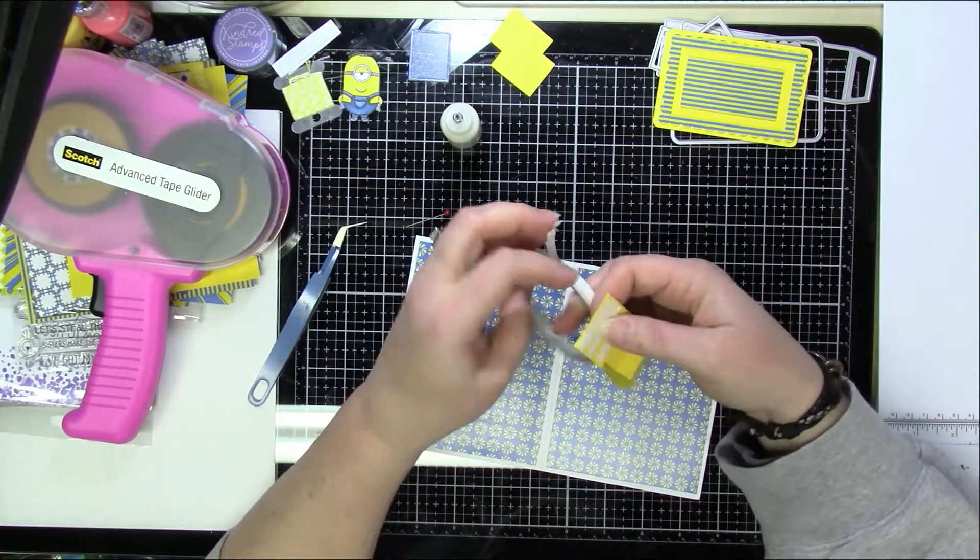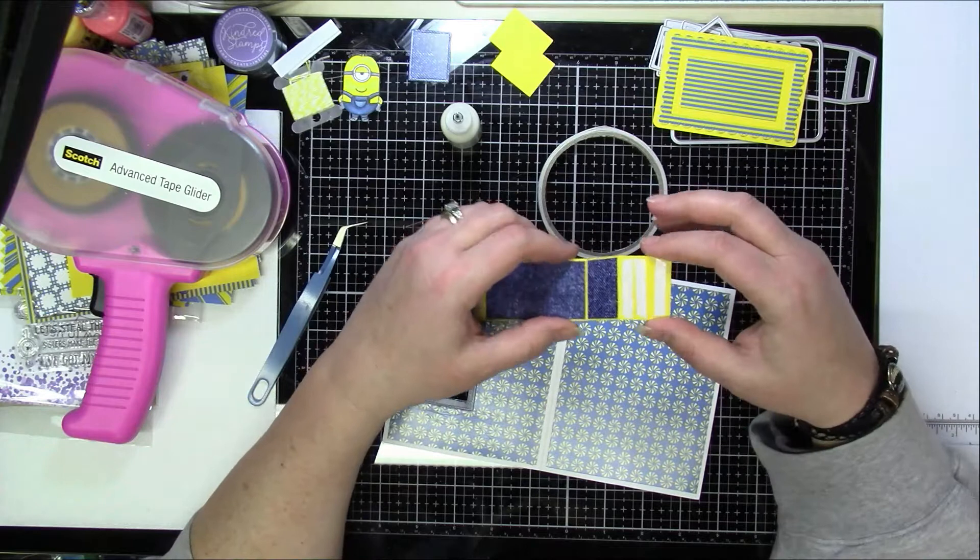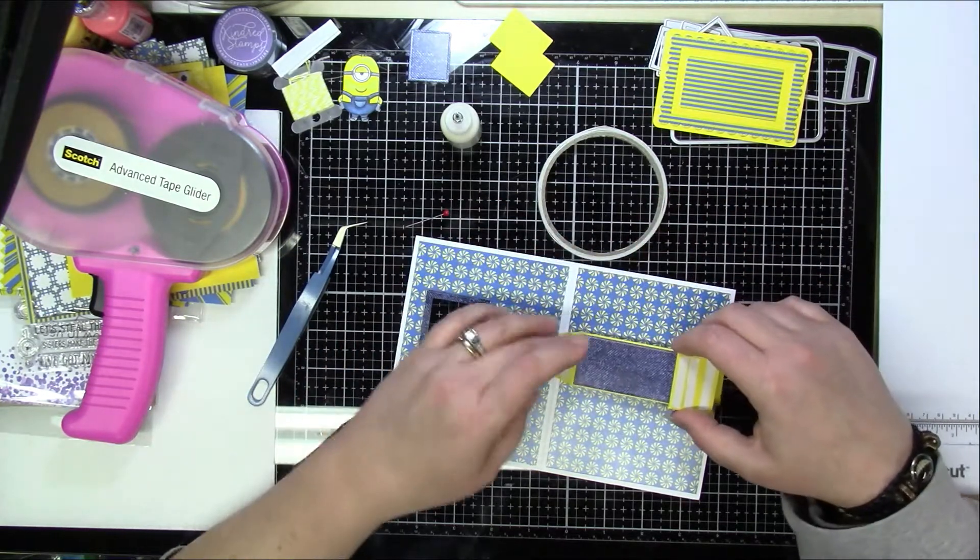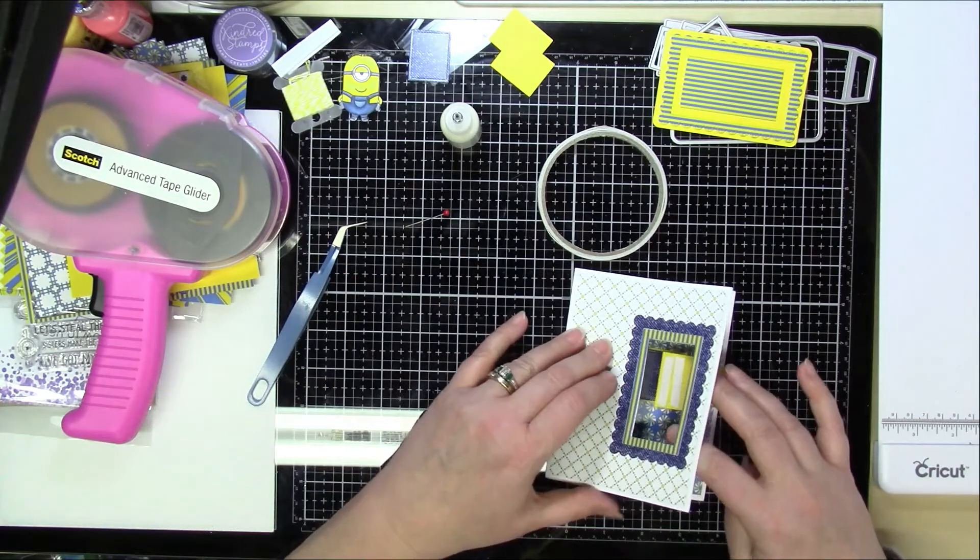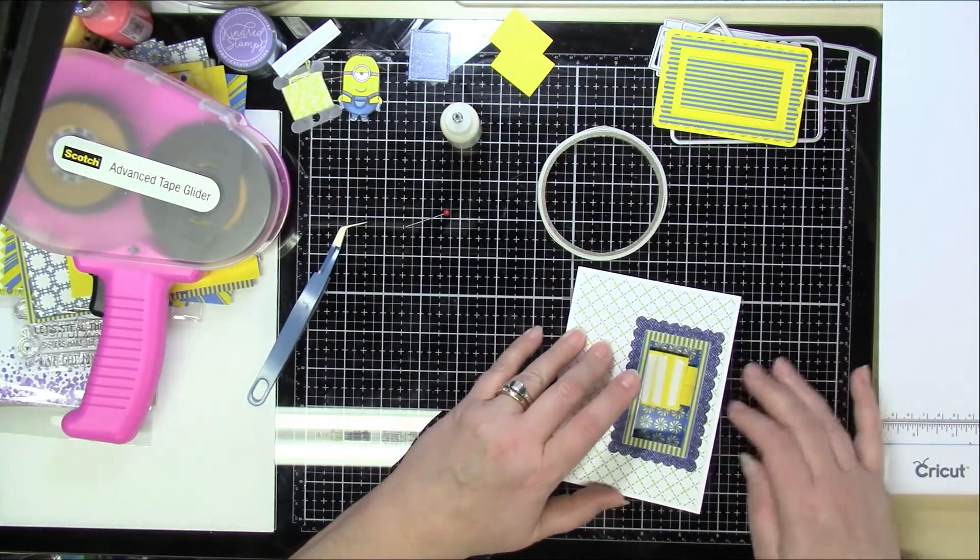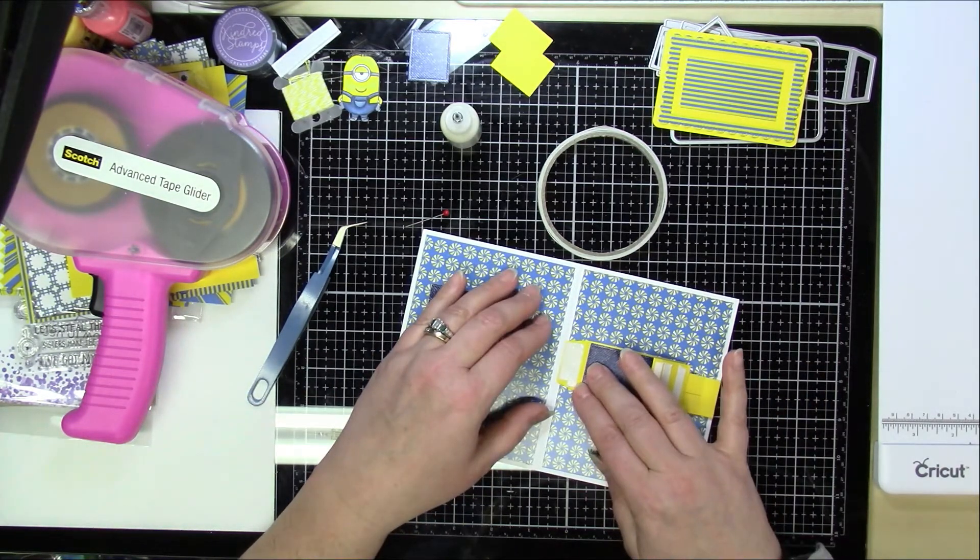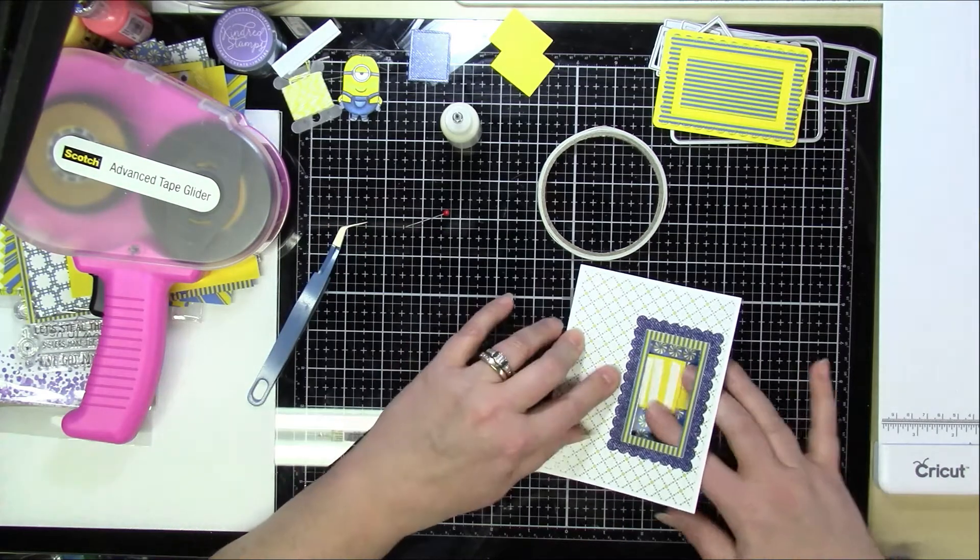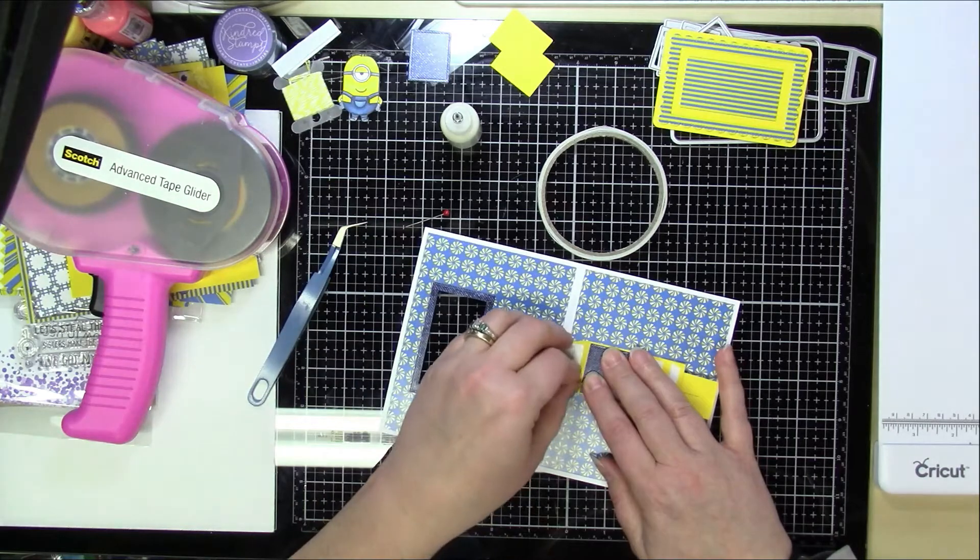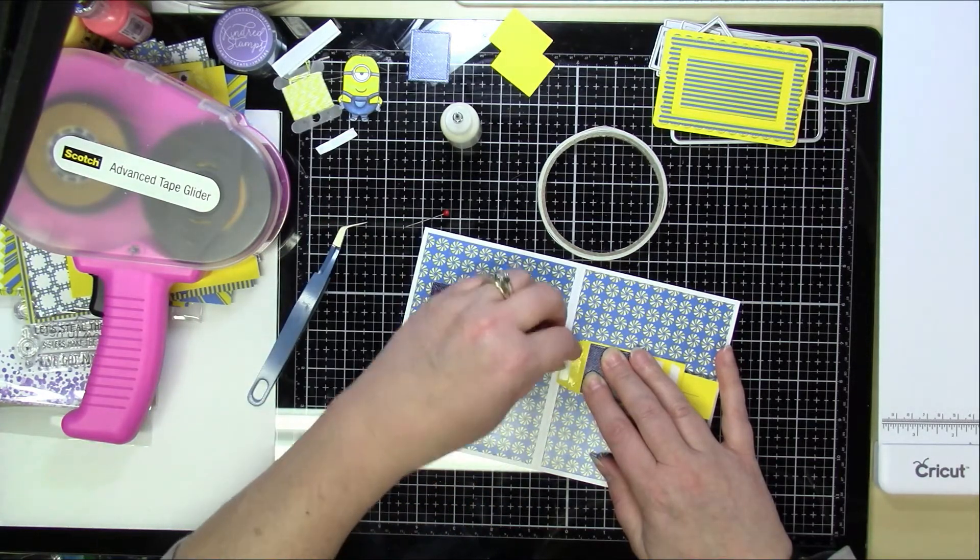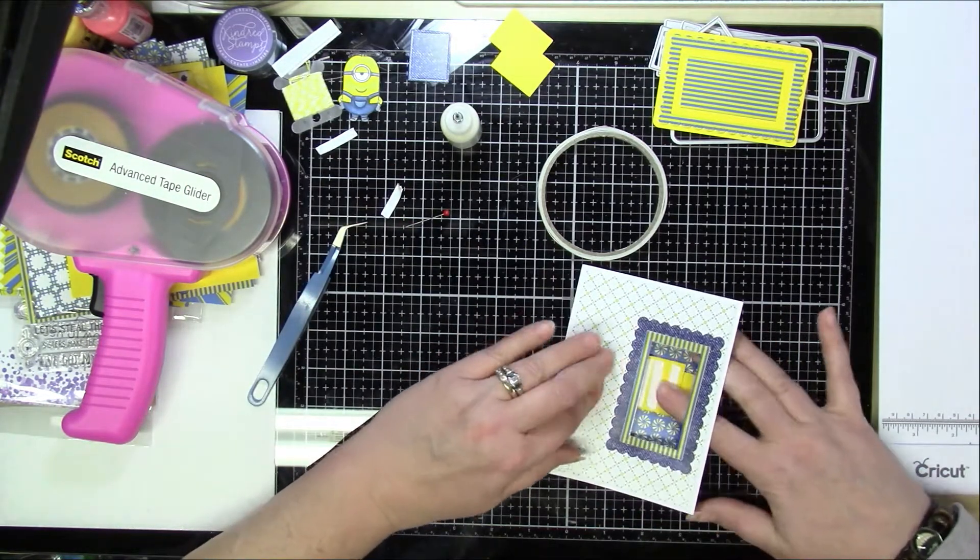And then you're just going to have to line this up. And this is super easy to line up because what you're going to do is you're first going to put it down right about where you want it. Now I check to kind of see where it's going to lay and I'm fine with it being a little above the center because the sentiment will go right there in that blue area with the panel. So now once you do that, you're just going to butt it right up against the score line. Not over the score line, but butt it up against it. And then take your adhesive off and just fold it.